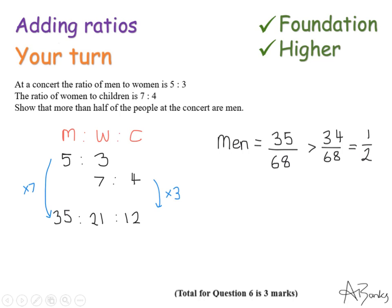Now we don't actually know how many people are at the concert. Just because these add up to 68 doesn't mean there were 68 people at the concert. But what we do know is that 35 out of 68 is my proportion of men. So that's the fraction of men at the concert. And this is more than a half because 34 over 68 is a half. So more than a half of people at the concert were men.